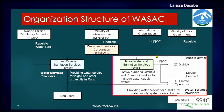WASAC is a state-owned enterprise under the Ministry of Infrastructure. It has two main departments: urban water and sanitation services, which serves urban areas and Kigali, the capital city; and rural water and sanitation services, which supports the districts. Rural water services are owned by the district, and the district contracts private operators for daily operation and maintenance. The department supports both districts and private operators.